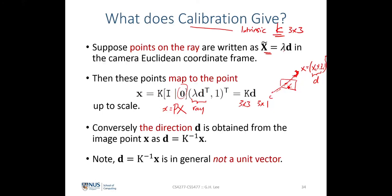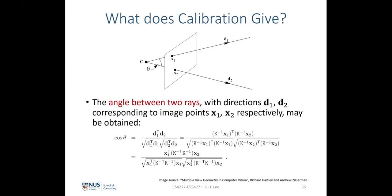Conversely, since x equals K multiplied by d, and K is an invertible upper triangular 3×3 matrix, we can invert this to get the direction of the light ray: d equals K-inverse multiplied by x. This means that from knowledge of camera intrinsics and a 2D image coordinate, we can express the mathematical equation of the light ray, and conversely, given a direction we can find the projection onto the image point.